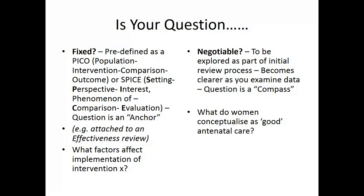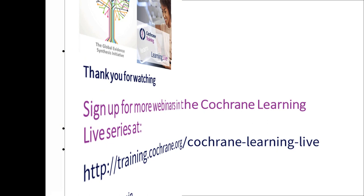If the question is negotiable and can be explored as part of the review process, it can act as a compass — showing the direction you can go — and might feed into refined questions for a systematic review later. For example, a compass question would be 'what do women conceptualise as good antenatal care?' and that conceptualisation can then feed into the quantitative intervention effect review. So there are two completely different types of questions you might want to address with a qualitative evidence synthesis.